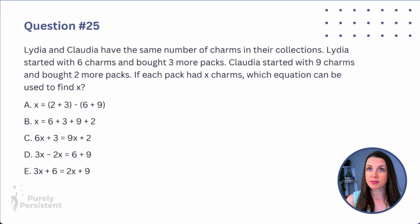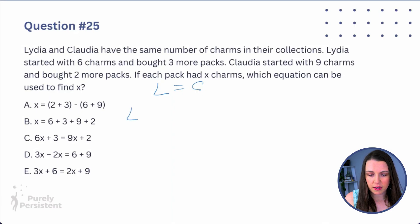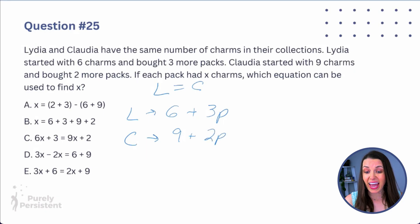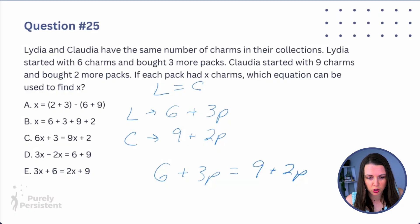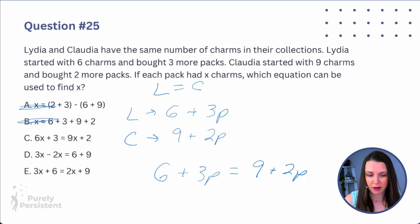Question 25: Lydia and Claudia have the same number of charms, so Lydia = Claudia. Lydia started with 6 charms and bought 3 more packs. Claudia started with 9 charms and bought 2 more packs. Each pack has X charms. Since Lydia = Claudia, I write: 6 + 3P = 9 + 2P. Looking at the answer choices — A, B, C, D don't match, but E looks right.